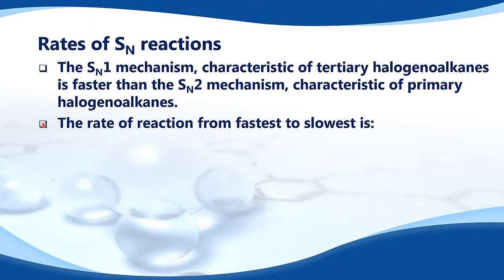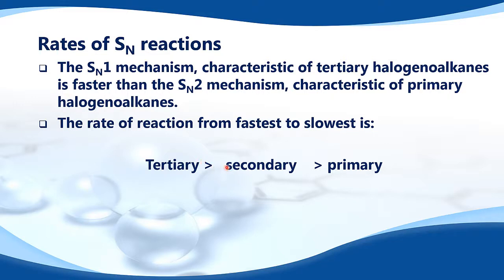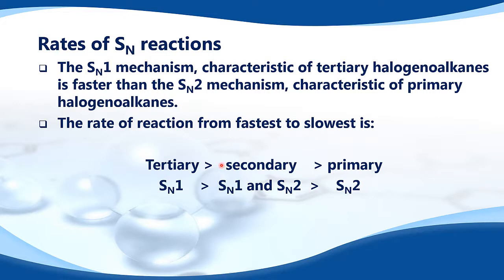The rate of reaction from fastest to slowest is: tertiary halogenoalkanes react faster than secondary halogenoalkanes, which react faster than primary halogenoalkanes. Tertiary halogenoalkanes undergo SN1, secondary undergo a mixture of SN1 and SN2 reactions, and primary undergo SN2 reactions.